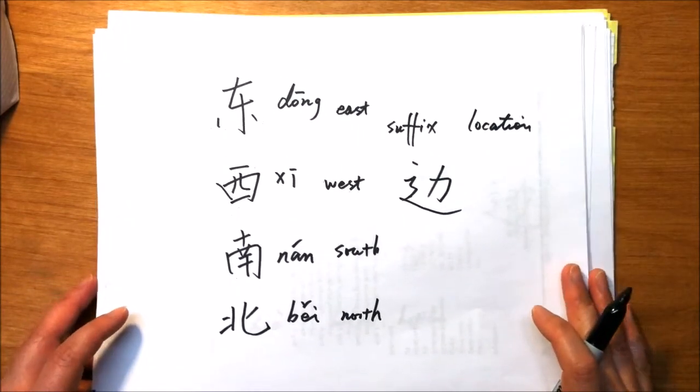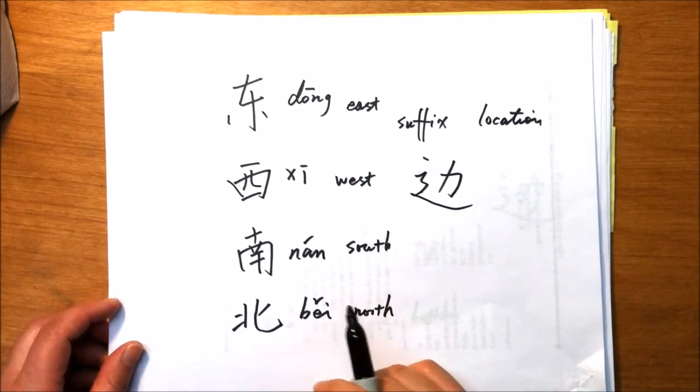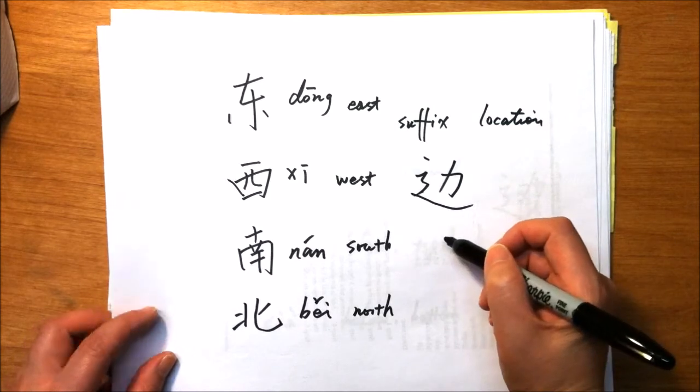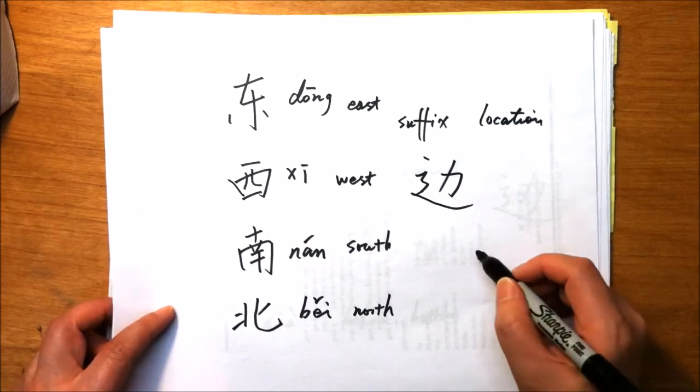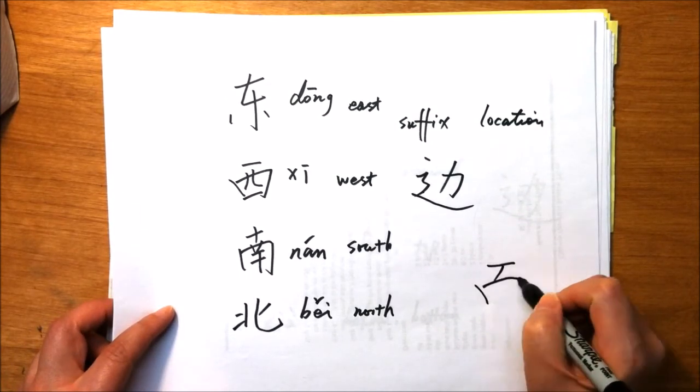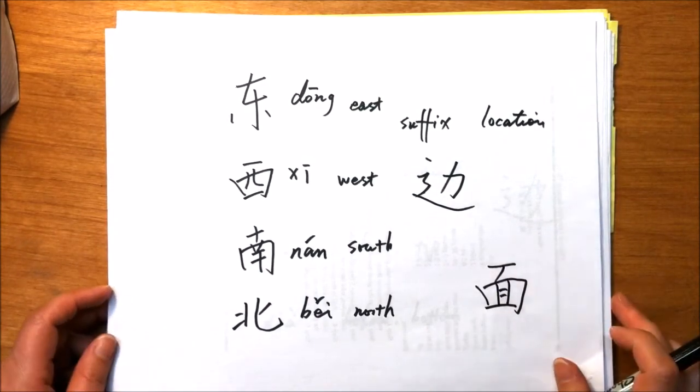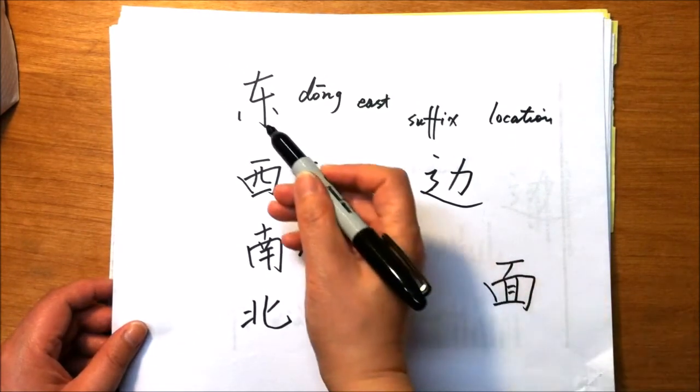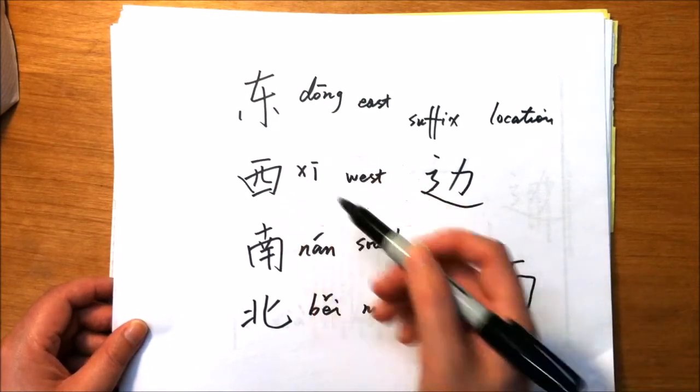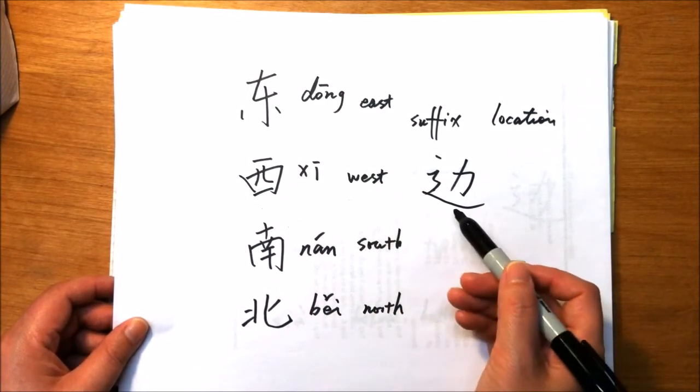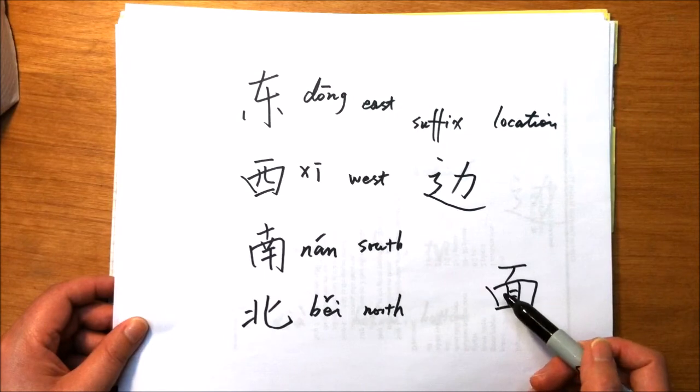Please notice that in many of these examples, 边 can be replaced by another character, 面, and they have the same meaning. For example, 东边 we can say 东面. 西边, 西面.